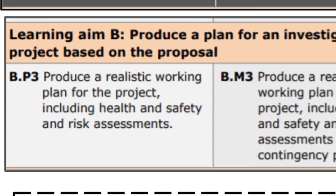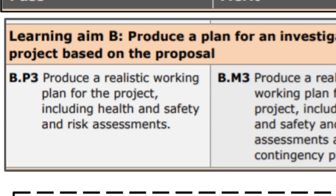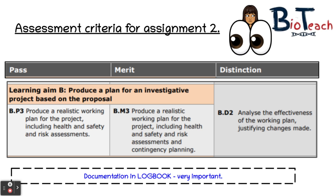For the pass criteria you need to be able to produce a realistic working plan, basically taking into account any possible constraints or anything that might be a hindrance to your experiment. You need to have a basic method that your teacher can follow, so the method needs to be very clear and in an instructional format. When you submit your plan you also need to take into account health and safety implications, so you will need to carry out a risk assessment as well.